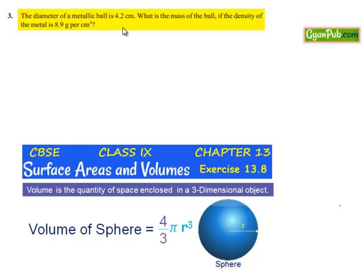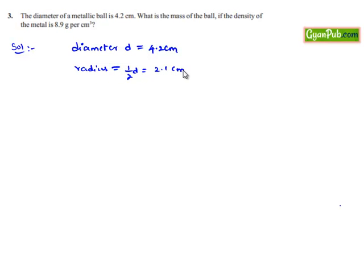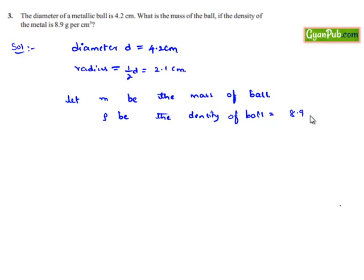Moving on to the third question: the diameter of a metallic ball is 4.2 centimeters. What is the mass of the ball if the density of metal is 8.9 gram per centimeter cube? The diameter is 4.2 centimeters, so the radius is 4.2/2 = 2.1 centimeters. Let m be the mass, ρ be the density equal to 8.9 g/cm³, and v be the volume. The relation is mass = density × volume.